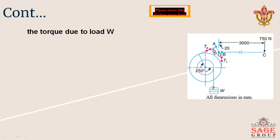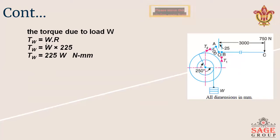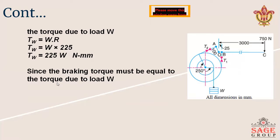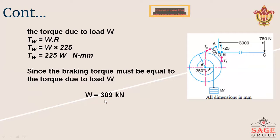Now, the torque due to load W equals W multiplied by the radius of the barrel, that is diameter divided by 2, which gives 225 mm. So the torque due to load W equals 225W Newton-mm. Since the braking torque must equal the torque due to load W, we equate both equations. After equating the braking torque and the torque due to load W, we get W equals 309 kN.